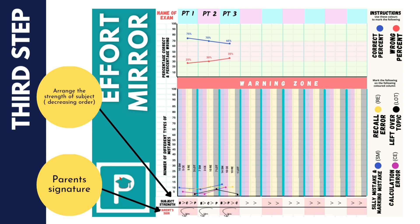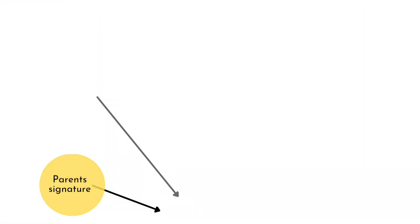At the bottom of this page there is a narrow column where you have to mention the subject strength after every exam in decreasing order. For example, if biology was the best among the three, it should be kept first, followed by either chemistry or physics as per your performance. Post which you are supposed to get each column after every exam signed by your guardian.